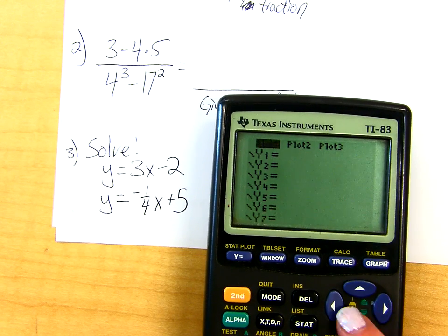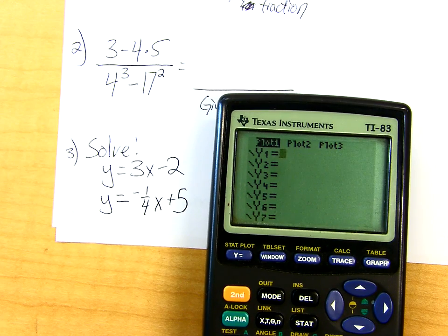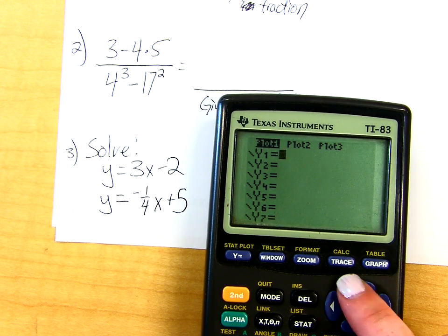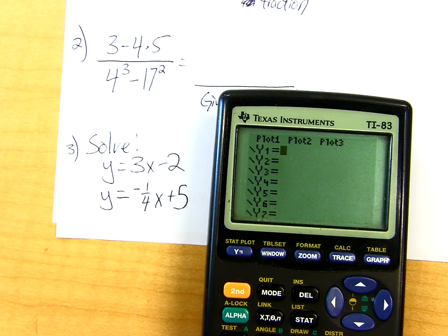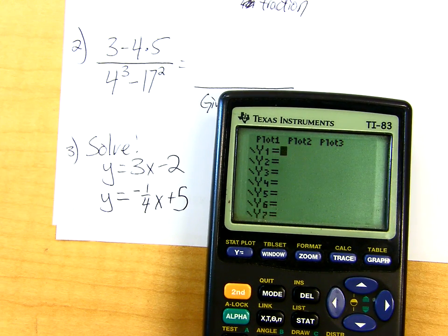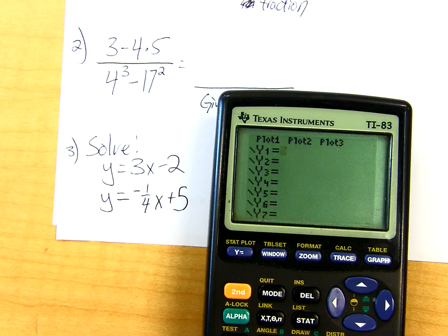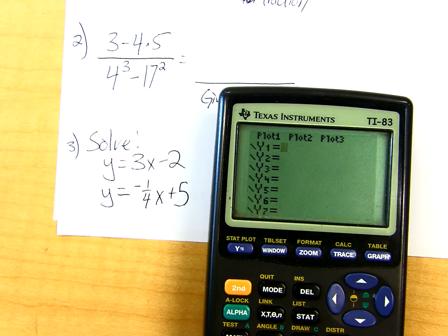If it looks like this, then you want to go up and turn that plot off because you don't want any of those plots on. So you just use the arrow key. You want to make sure that they are all normal looking like they are right now.